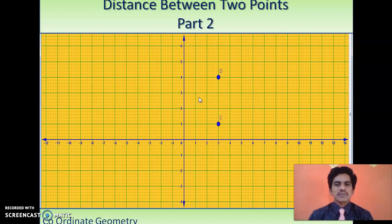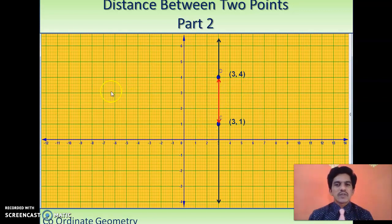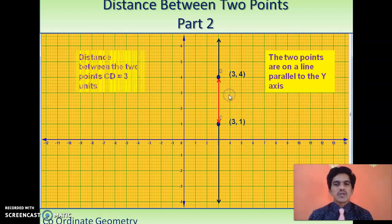Now we take another example with points C and D. The coordinates of C are (3, 1) and the coordinates of D are (3, 4). When you join these two points you get a straight line parallel to the y-axis because their x-coordinates are equal. Counting the units from C to D — 1, 2, 3 — the distance between C and D is 3 units.